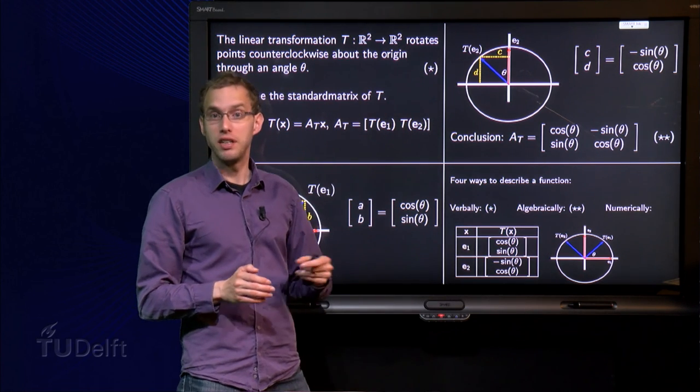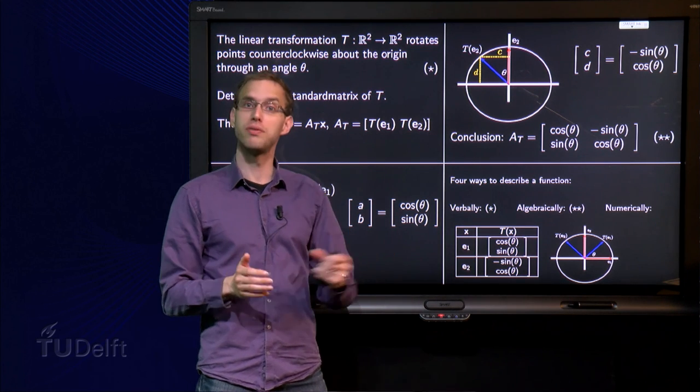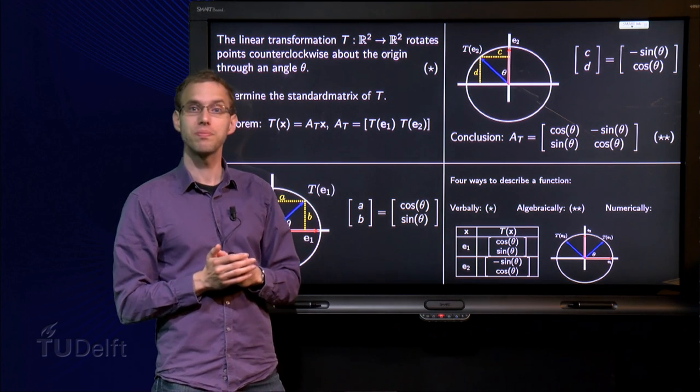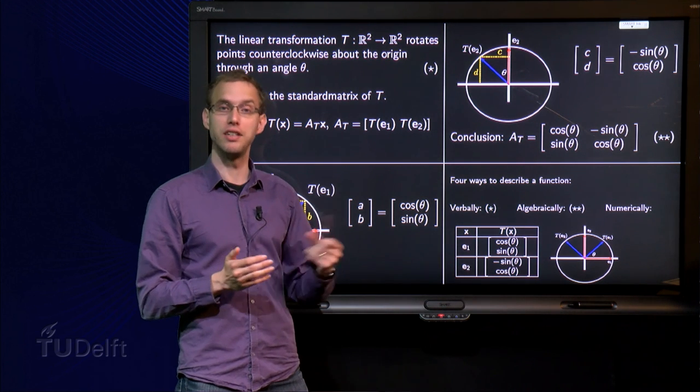Why only T(e₁) and T(e₂)? Well, because it's sufficient. If you have a transformation from R² to R², you only need to specify T(e₁) and T(e₂).